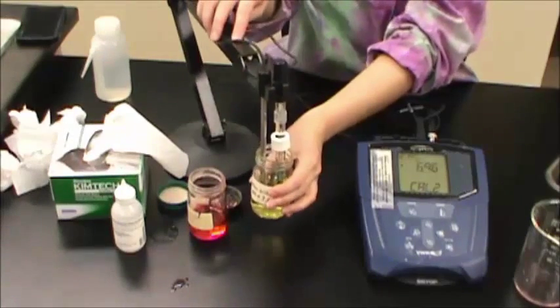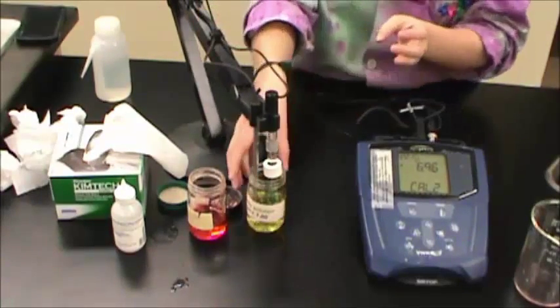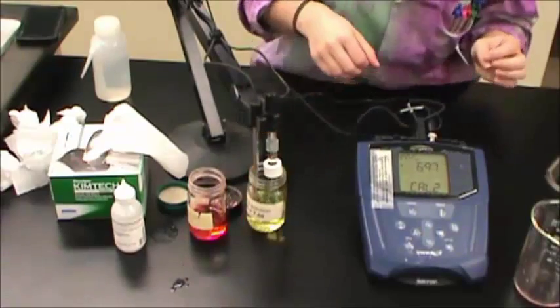Place the probes in the second buffer solution and gently swirl the container. The instrument should automatically read the correct pH.